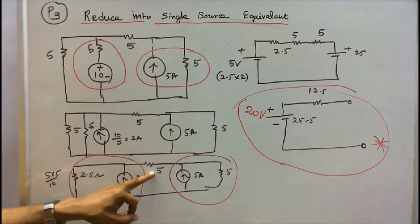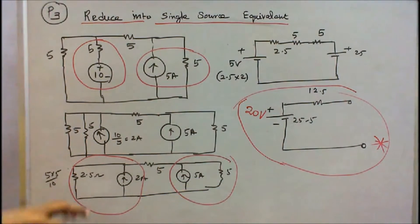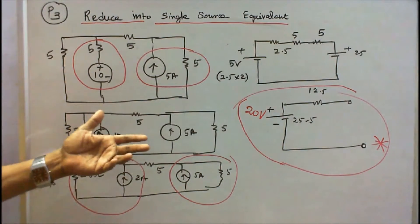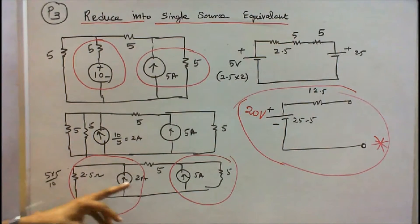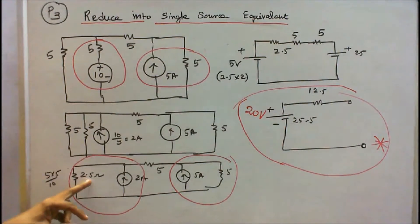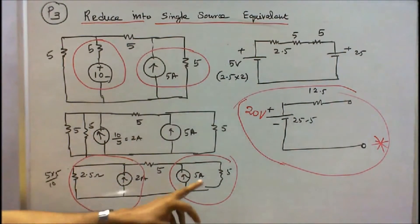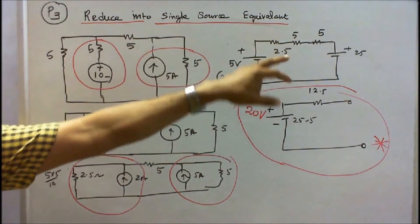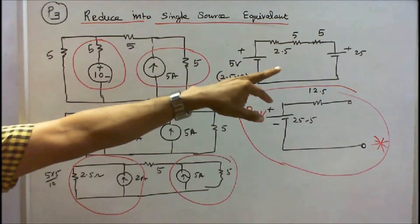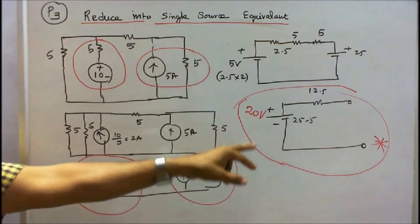This is 2 amps with 5 ohms and 5 amps with 5 ohms. There are 2 current sources. I will convert into a voltage source: 2.5 into 2, that is equal to 5 volts, and this 2.5 ohms should be connected in series. Similarly, 5 into 5 gives 25 volts. The total resistance is 12.5 ohms. The voltage is 25 minus 5, that is equal to 20 volts. This is the single source equivalent.